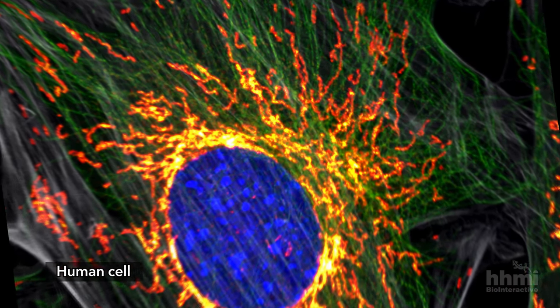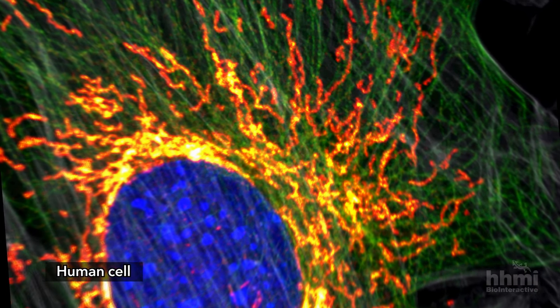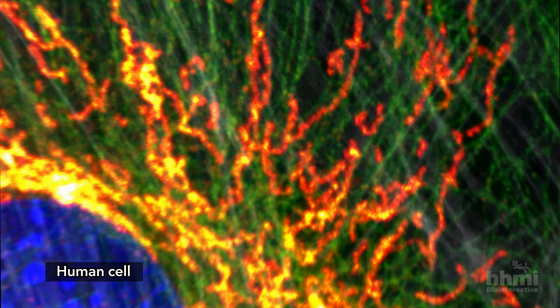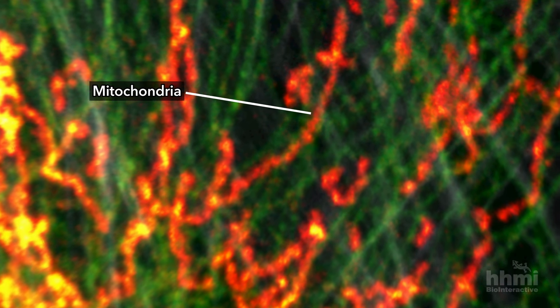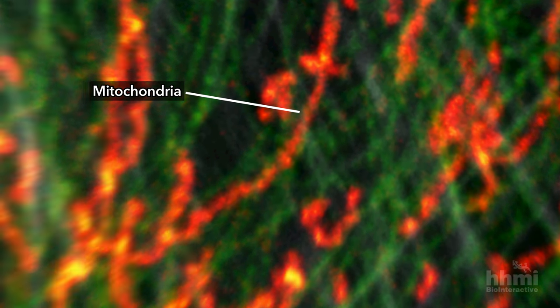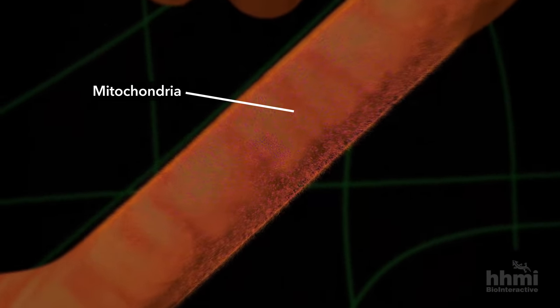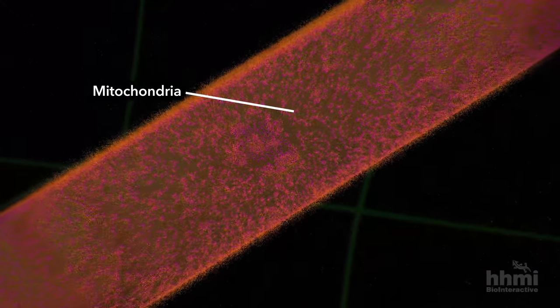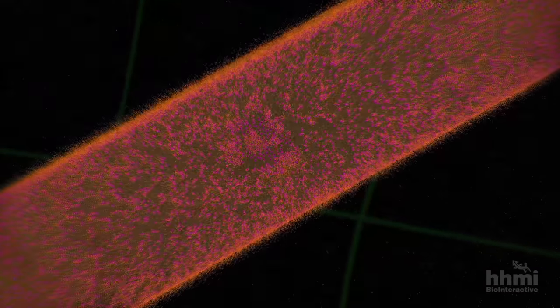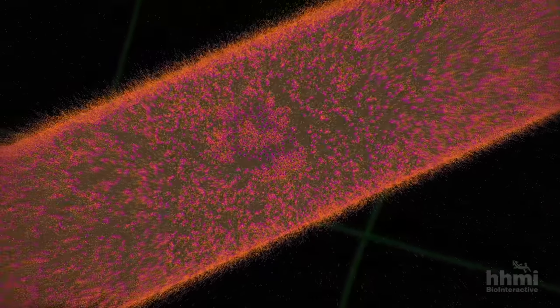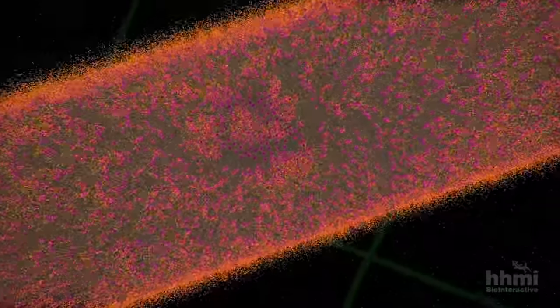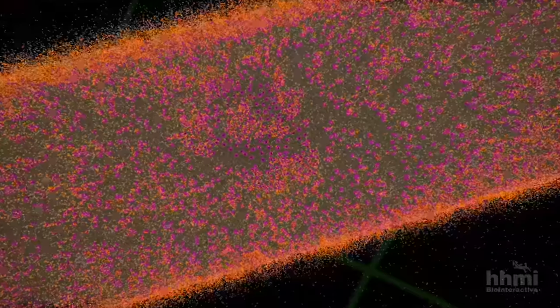The primary source of ATP in your cells are mitochondria organelles. Deep inside mitochondria, chemical reactions of aerobic respiration consume oxygen from the air you breathe to generate vast amounts of ATP.